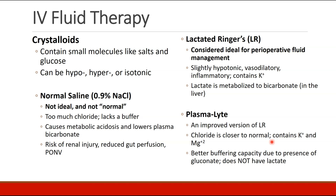The first is normal saline, or 0.9% sodium chloride. As we have discussed, normal saline is not ideal and not normal. Even though its osmolarity is just over 300 and very close to normal physiologic osmolarity, there's too much chloride in it, and it lacks a buffer to maintain pH. Sodium chloride in large doses can cause metabolic acidosis and lower plasma bicarbonate.